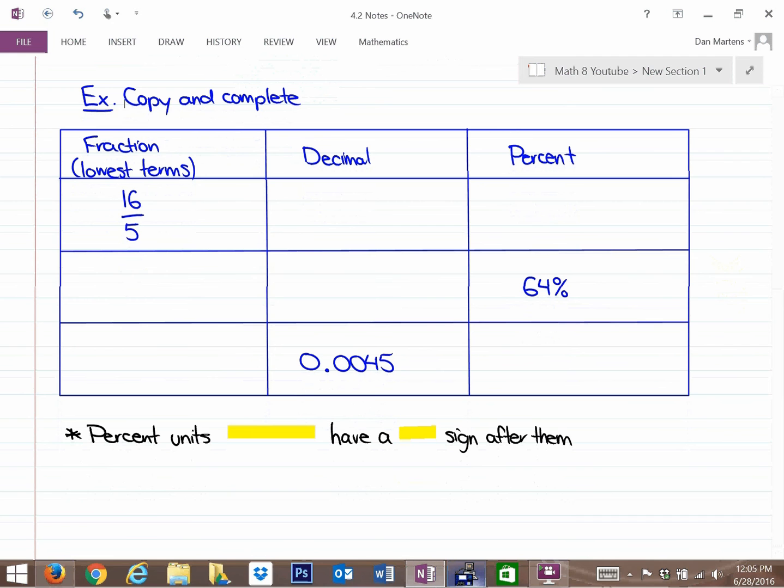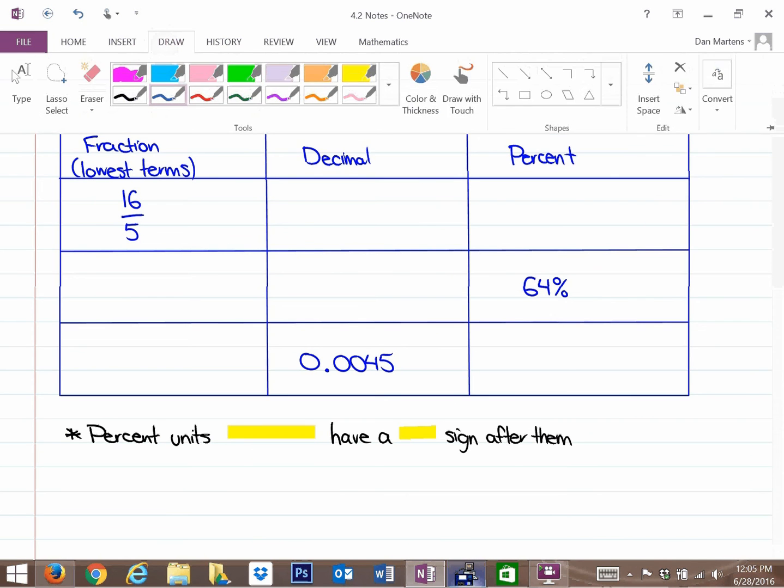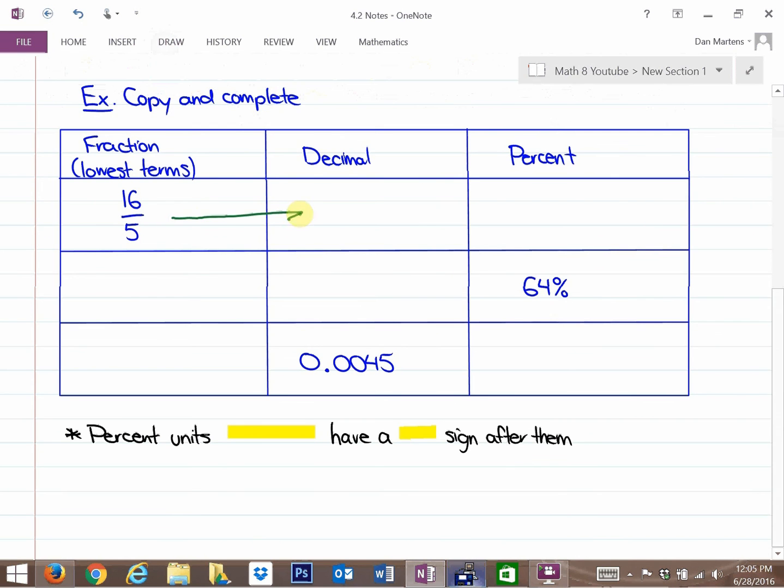All right, so if you look at this table here, again, take some time copying it down. We're going to look at how to convert from fractions, decimals, and percents, and you're going to be practicing this quite frequently. Now, if we look at 16 over 5, we know that that's more than 100% because it's more than a whole. Okay, but if you want to figure out the decimal equivalent for that, you can do 16 divided by 5, and you get 3.2. So let me just write that down right now.